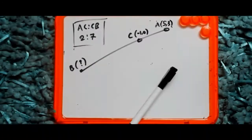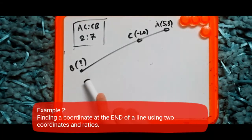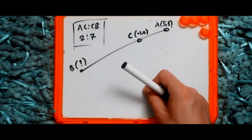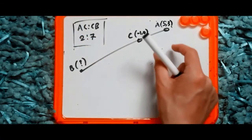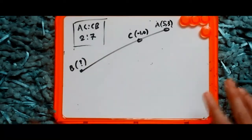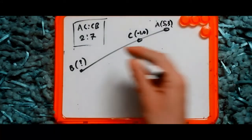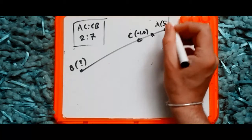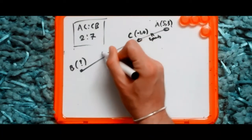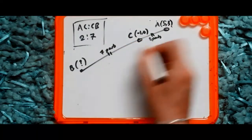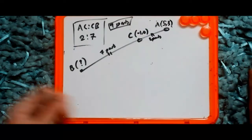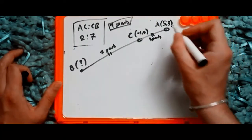In this next example, we'll figure out the value of coordinate B, given that we know two other coordinates on the same line segment. We're given the ratio AC to CB is 2 to 7. This means AC has a weighted value of two parts and CB has seven parts, so the whole line has a total of nine parts.